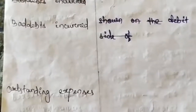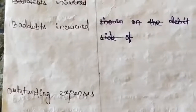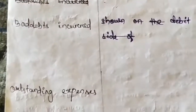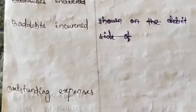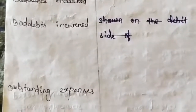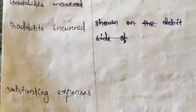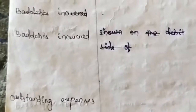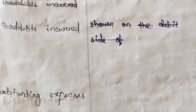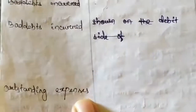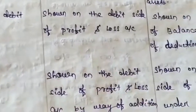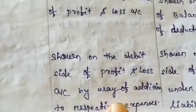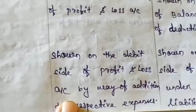If expenses outstanding relate to wages, the treatment is done in the trading account. If they relate to indirect expenses like salaries, the treatment is done in the profit and loss account. Mostly, outstanding expenses are indirect — salaries, commission, bonus. Wages are outstanding in rare cases. If indirect, the first treatment is shown on the debit side of the profit and loss account by way of addition to the respective expenses. For example, if salary is outstanding, you add the outstanding amount to the salary already shown on the debit side.